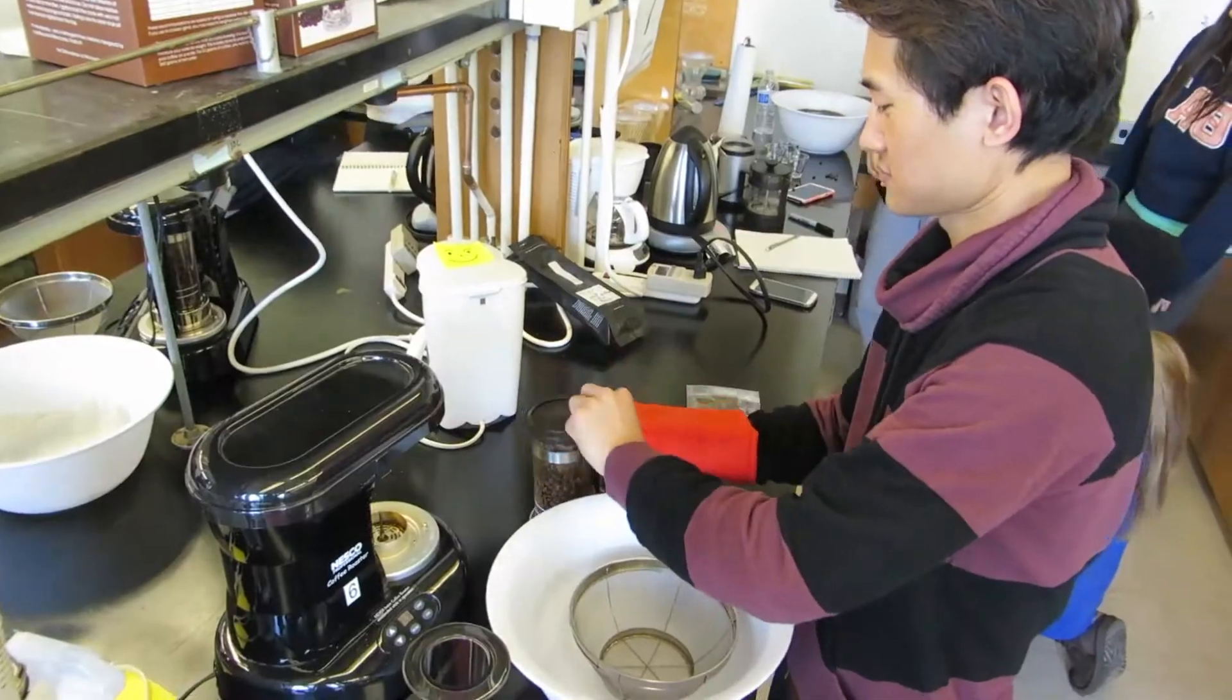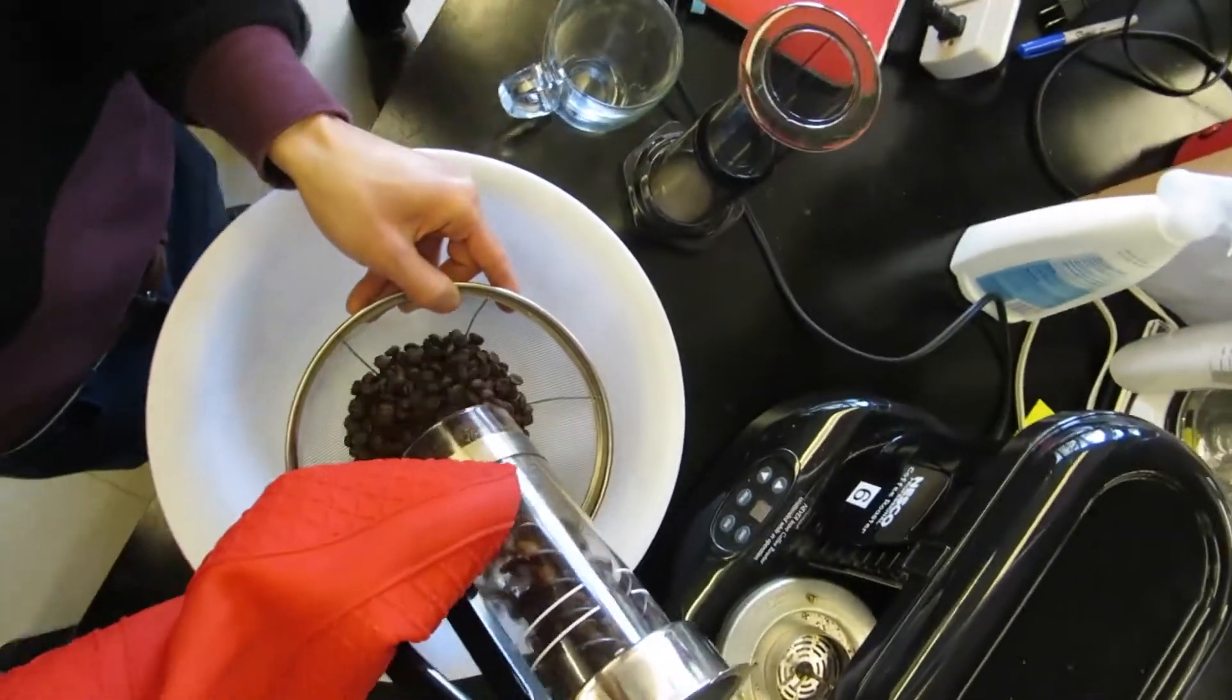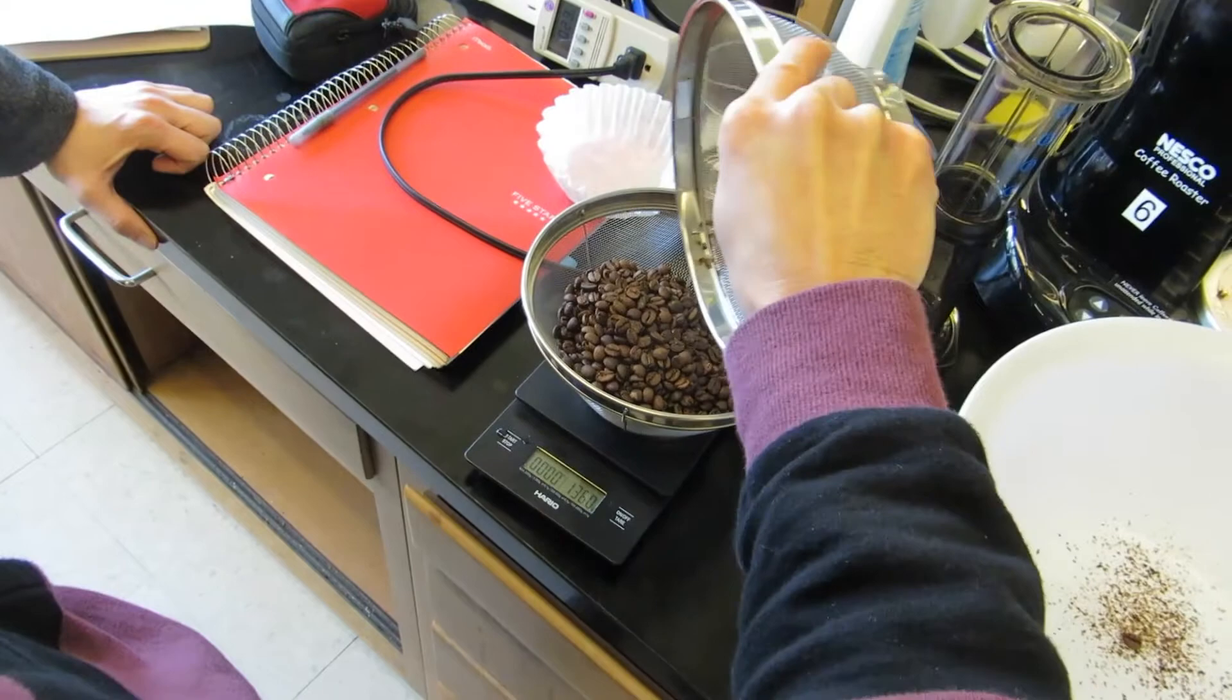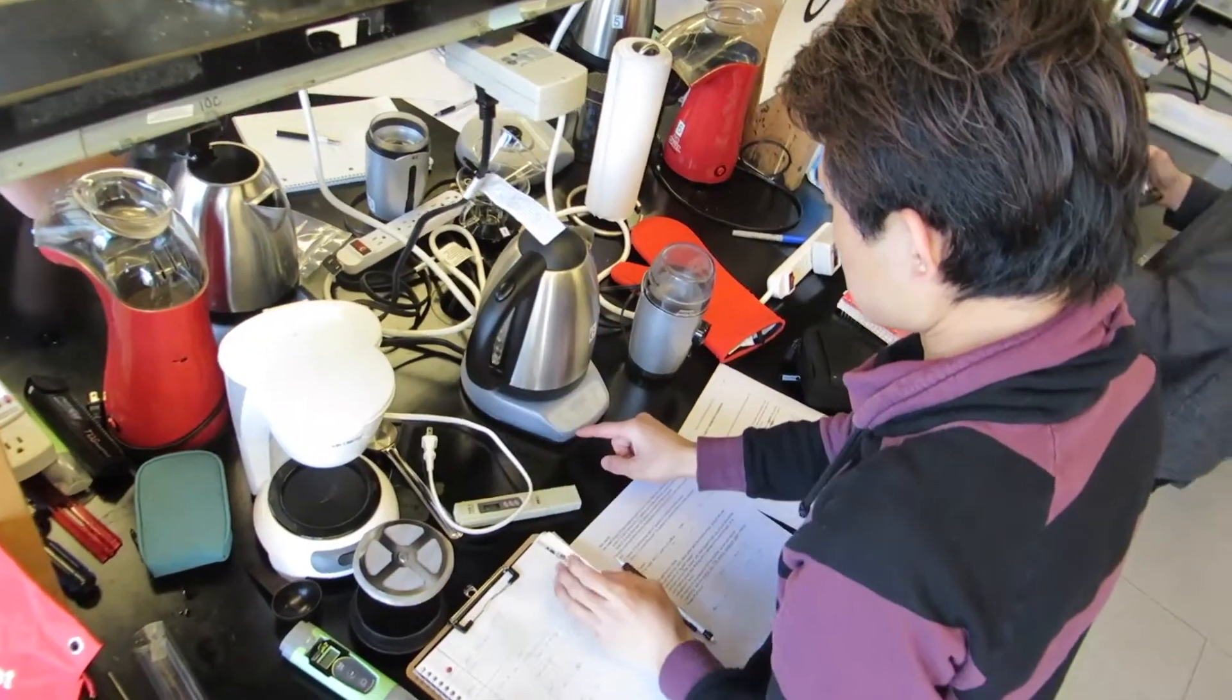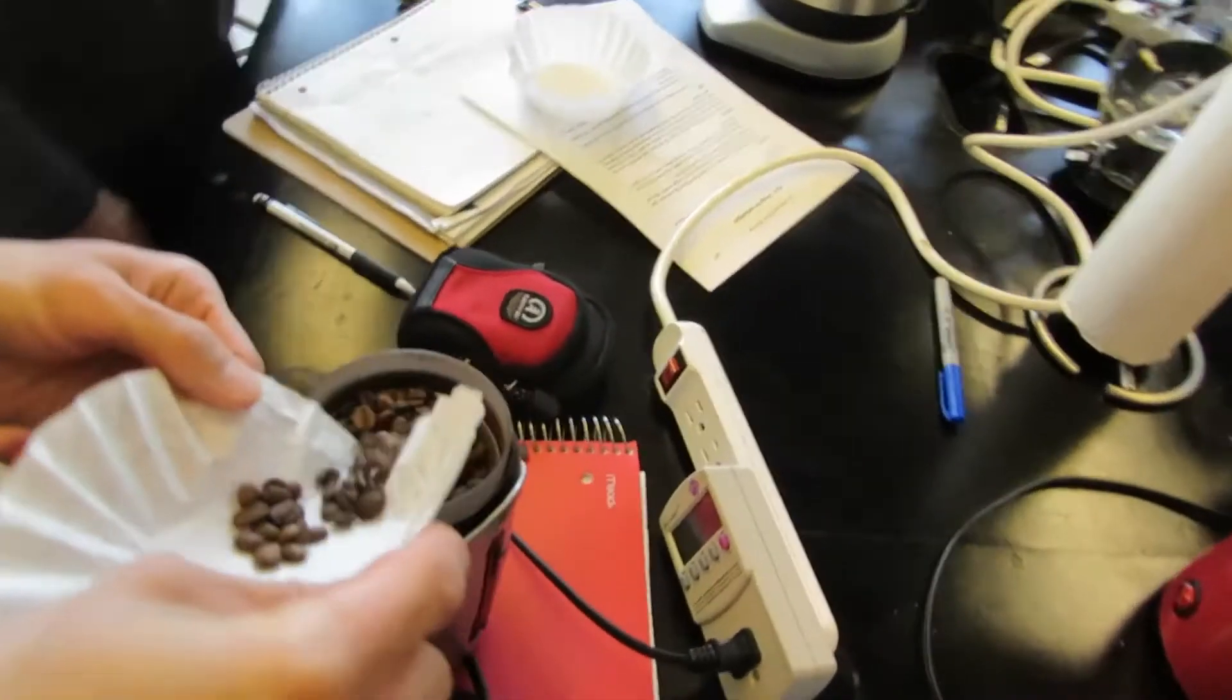Overall, in our actual brew of 1,000 milliliters, we used 54 grams of beans. In order to save time during the competition, we practiced our skills of heating up the water while simultaneously grinding our beans.